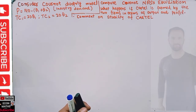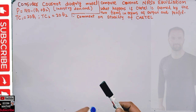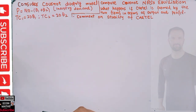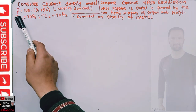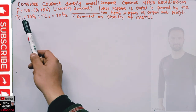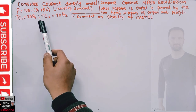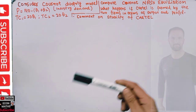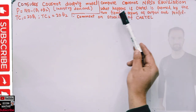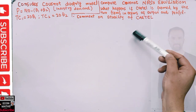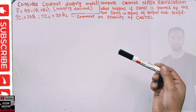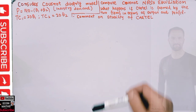In this video we will learn about the Cournot-Nash equilibrium, what happens if firms form a cartel, and the stability of cartel. The question is: consider a Cournot duopoly model with industry demand P = 140 minus (q1 plus q2), where q1 and q2 are outputs of firm 1 and firm 2 respectively. Total cost for firm 1 is 20q1 and total cost for firm 2 is 20q2. We need to compute the Cournot-Nash equilibrium, analyze what happens if a cartel is formed in terms of output and profit, compare it with the Cournot-Nash equilibrium, and comment on the stability of the cartel.